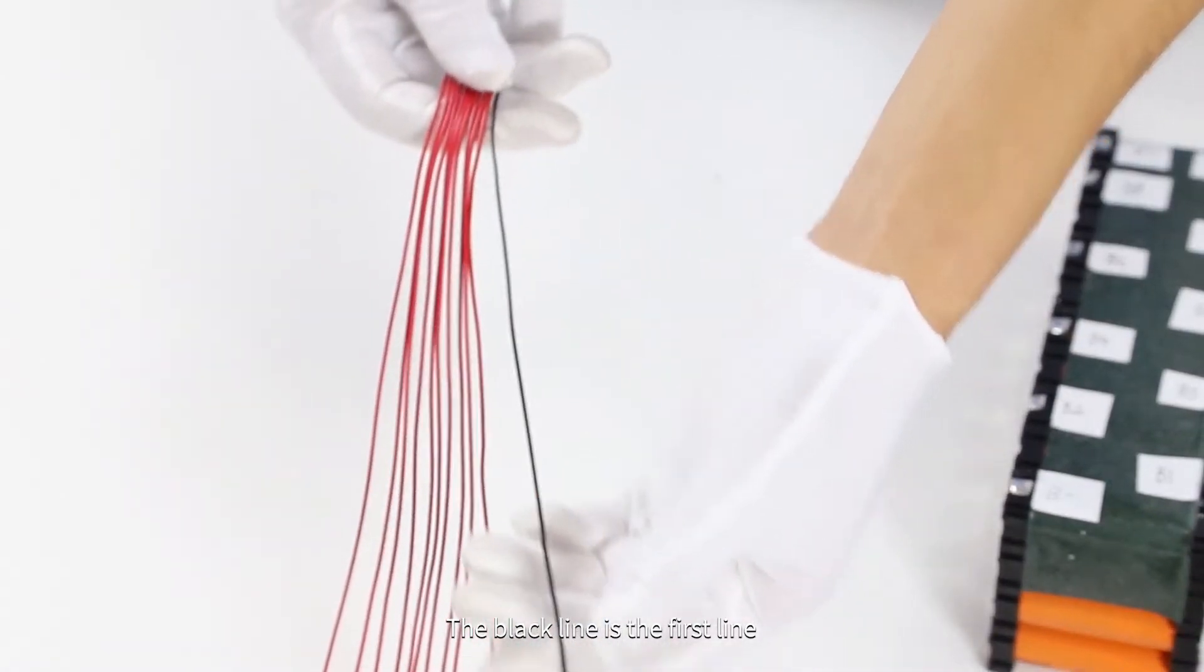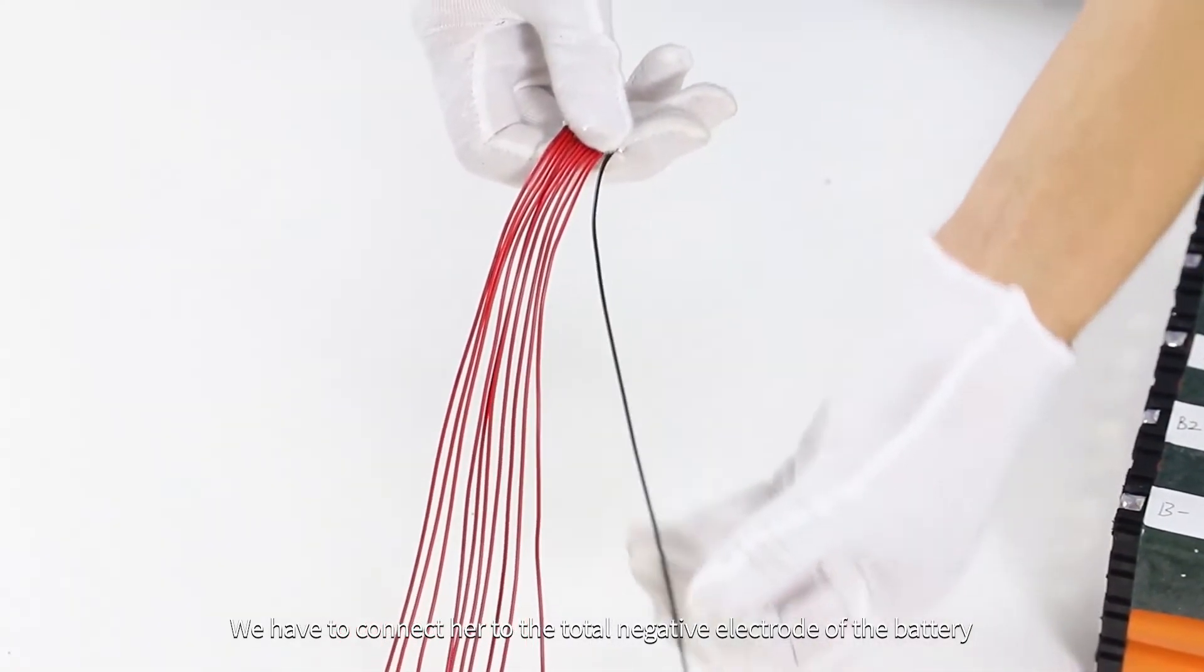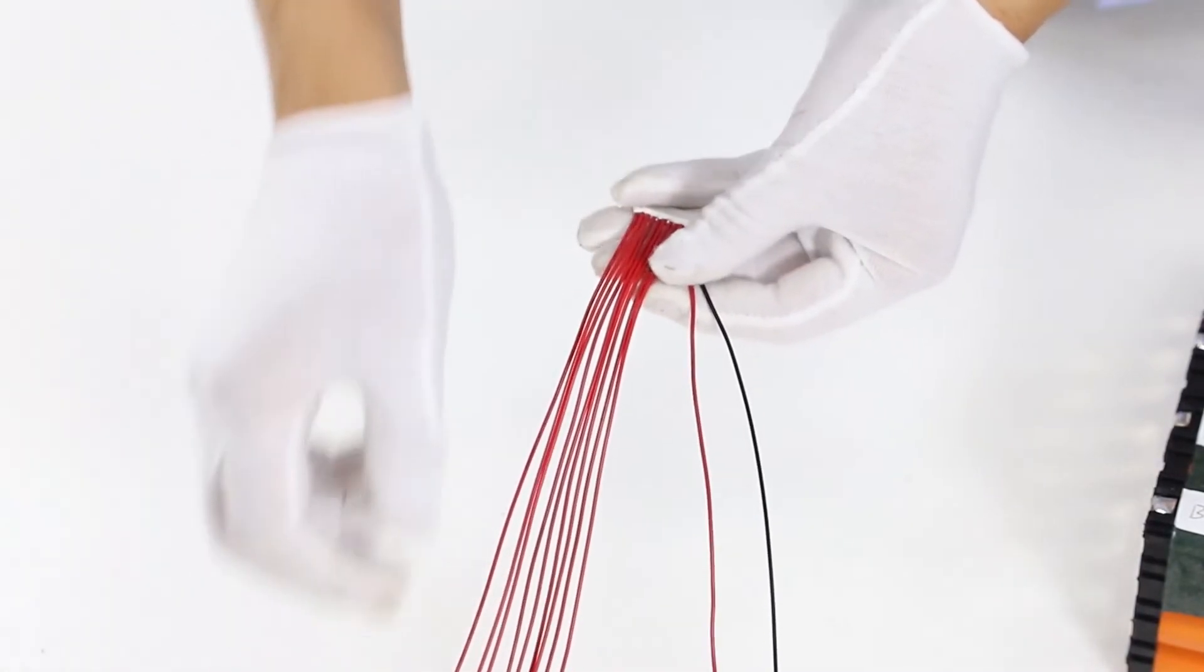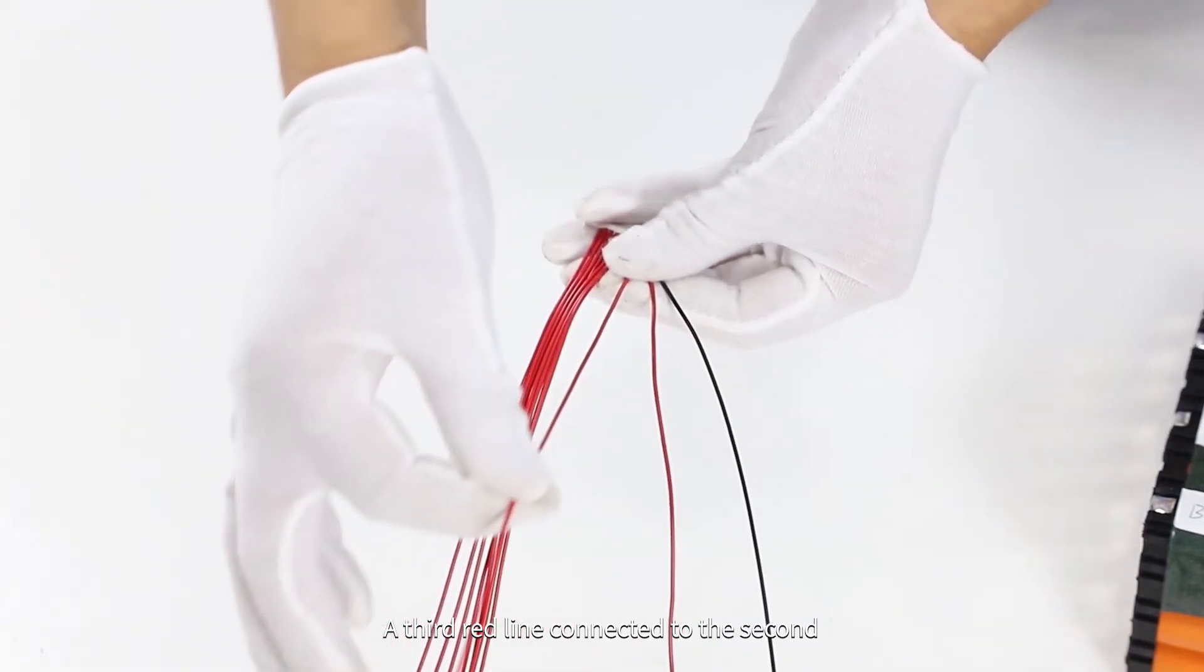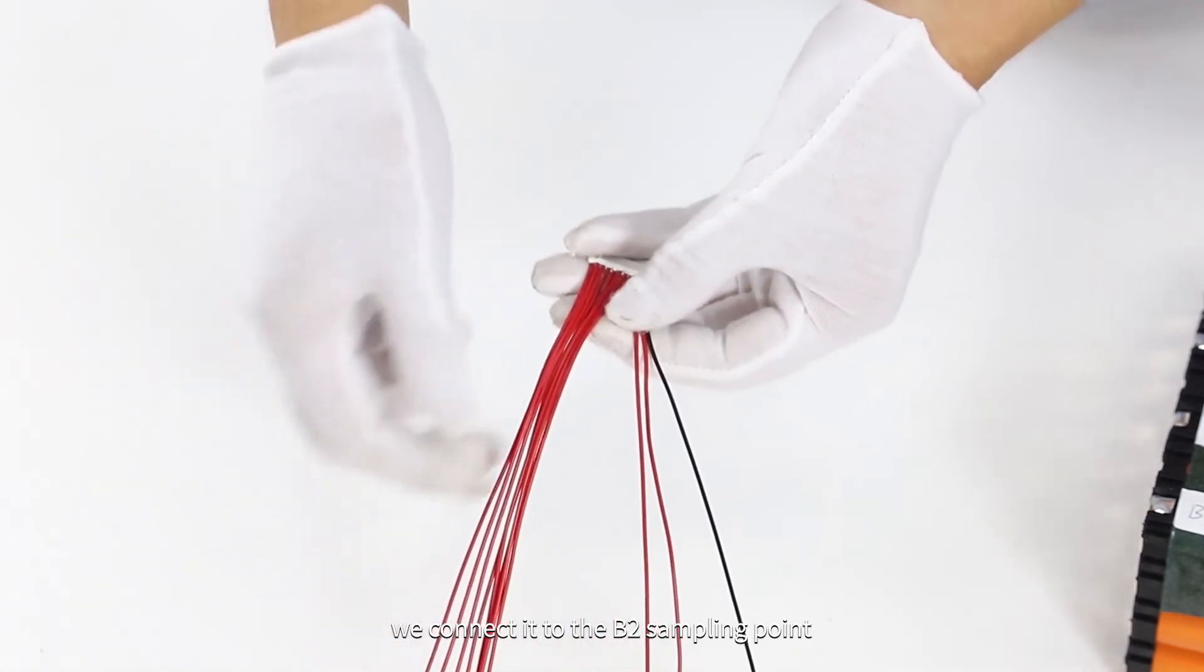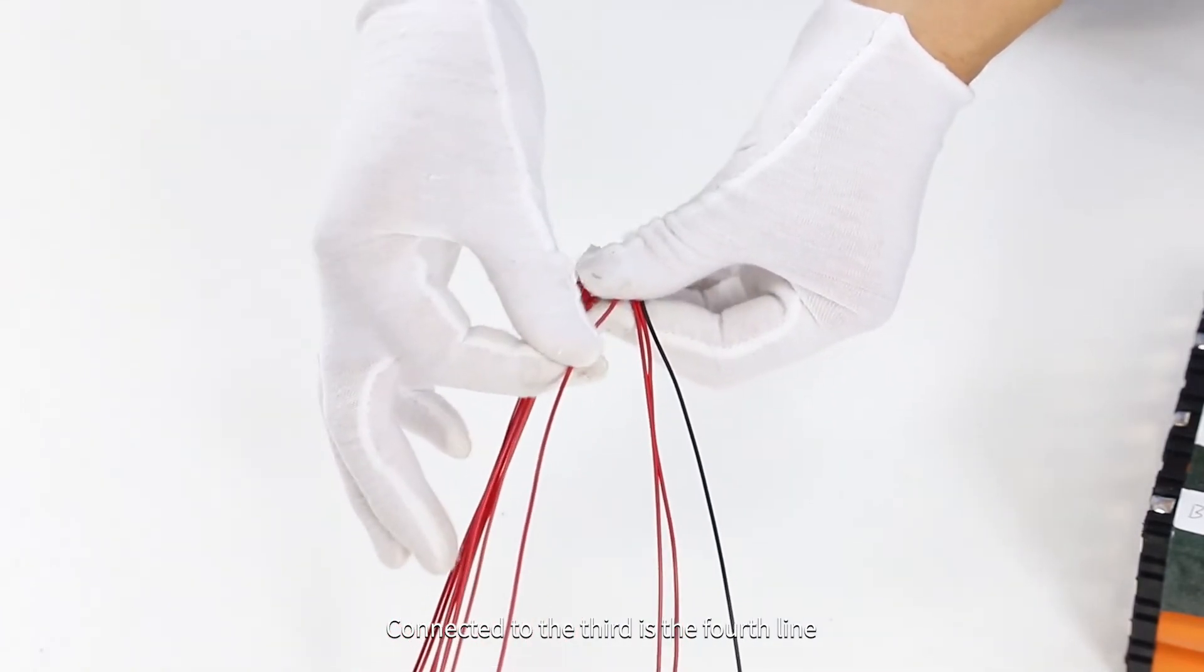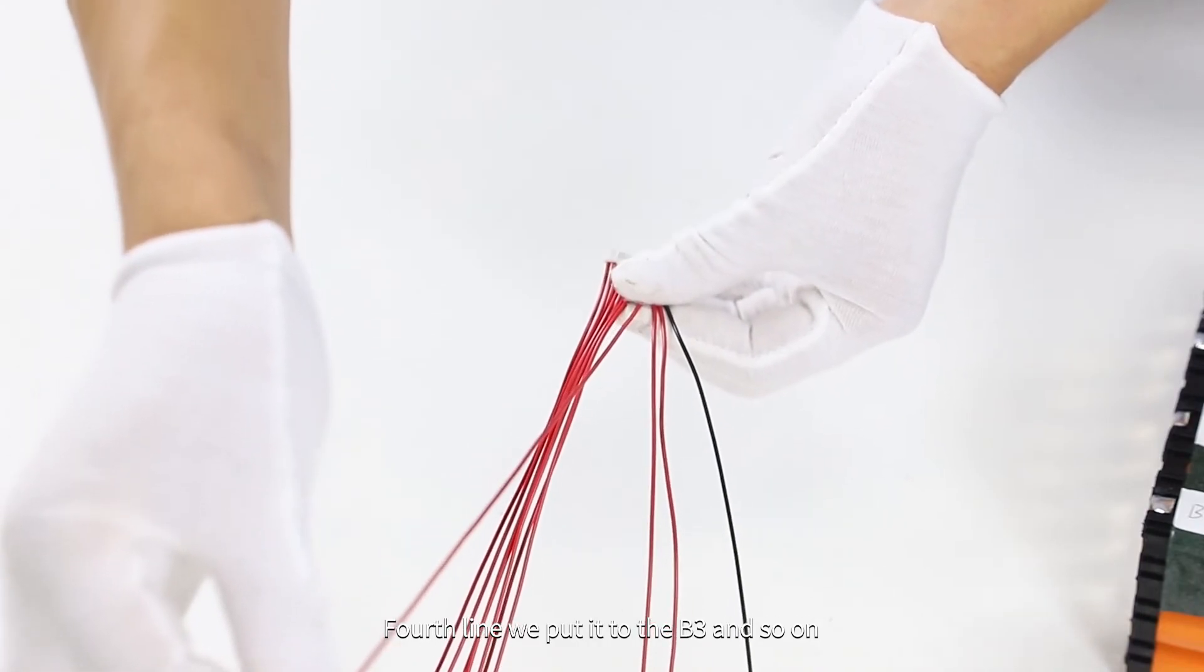The black line is the first line. We have to connect it to the total negative electrode of the battery. The second line is red, we'll take it to B1. The third red line we connect to the B2 sampling point. Connected to the third is the fourth line. Fourth line we put it to B3, and so on.